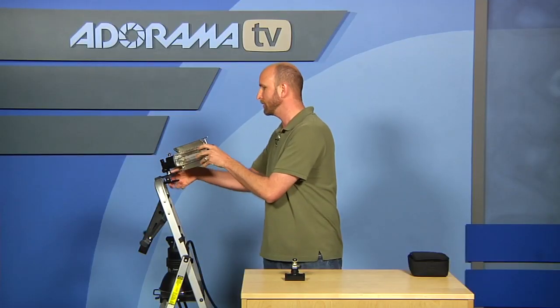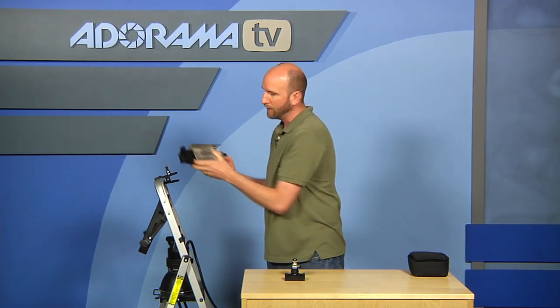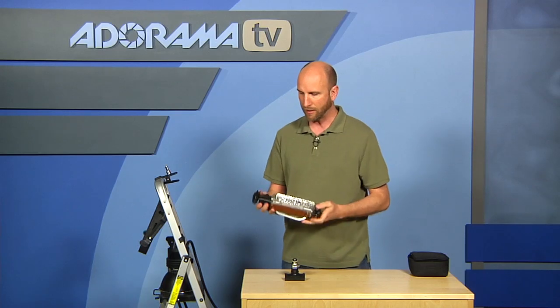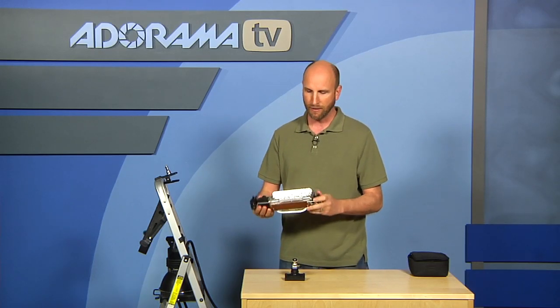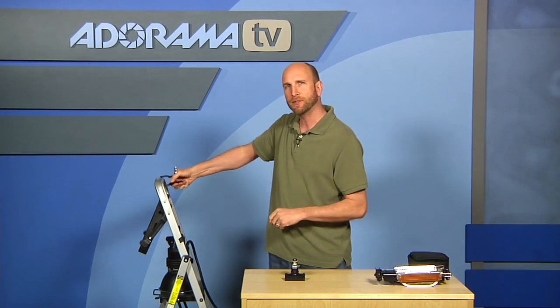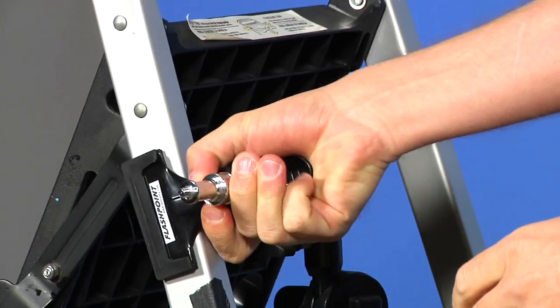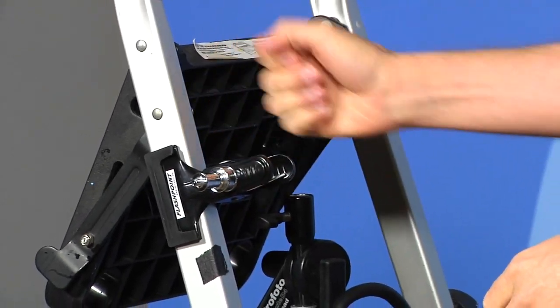Now the other thing that I want to show you is just how much weight these things can hold because it's pretty impressive. So I'll take this out. This is a pretty lightweight little Lowel light and it just weighs a pound or so. So the question we had when we first saw this is, can I actually put a little bit heavier weight of a light on here?